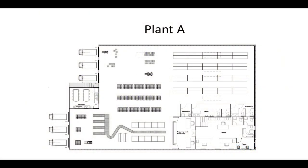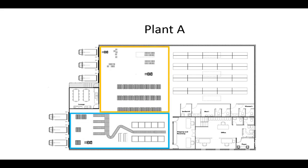In SAP a plant is any area that can hold stock. This could be a manufacturing facility, a distribution center, or maybe even just a long-term storage facility. Storage locations are subsections of the plant. For example, the blue area may represent where manufacturing and rework is done, the yellow could represent small package and fast pick area, and the green area could represent pallets and long-term storage.